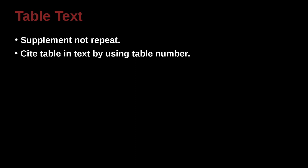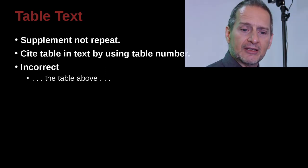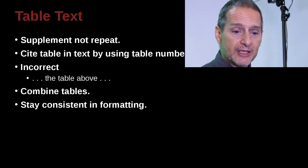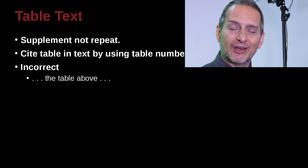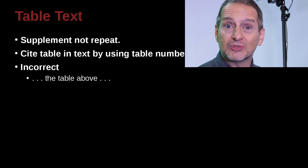When you cite a table, of course, you're going to say something like see table 1, see table 2. So for example, this would be the wrong way, the table above. And then this would be the right way. Well actually, we don't have the right way here. The right way would be see table 2, see table 1.